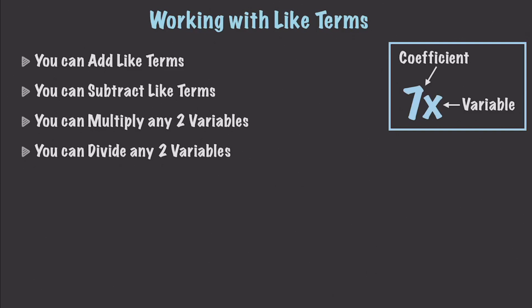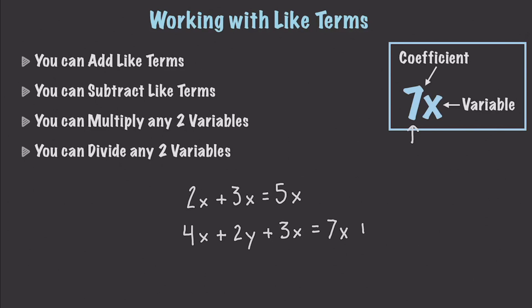And that brings us to working with like terms. Very often you're going to hear words like coefficient being used, and that just means the number that lies before our variable. One thing you can do is you can add like terms. For example, we can go and say 2x plus 3x and add those together to get 5x. We can also have 4x plus 2y plus 3x. We cannot add the x's to the y's, but we can add our x values, so 4x plus 3x gives us 7x. And then that just leaves our 2y.